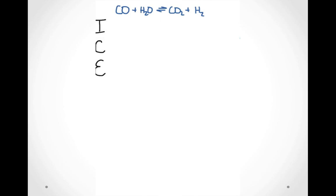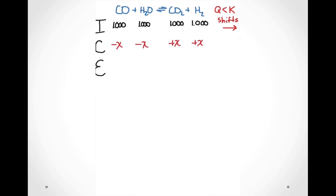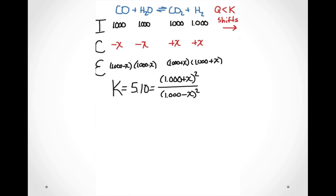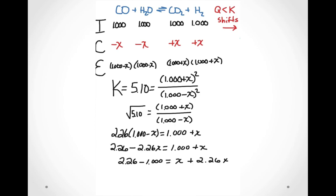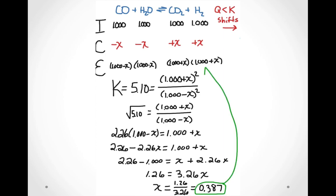We'll continue this problem by creating an ICE table. ICE is a mnemonic for initial, change, and equilibrium. The initial concentration of each species is written underneath it in the balanced equation. Since this reaction shifts to the right, the concentration of each reactant will change by subtracting x, the extent of the reaction, and the concentration of each product will change by adding x. We can then write out these expressions for the equilibrium concentrations and substitute them into the equilibrium expression. In this case, the right side of the equals sign is a perfect square, so we can take the square root of each side to simplify the equation. Once we solve for x, we see that the extent of this reaction is 0.387.